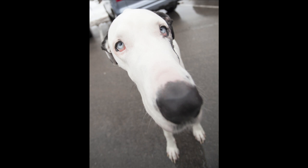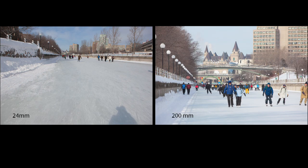Wide lenses generally produce a larger depth of field and are also good for capturing large areas in landscape photography. In these two examples, the photo was taken from the same position but with a wide lens and a long lens. Notice the drastic difference in the area covered.